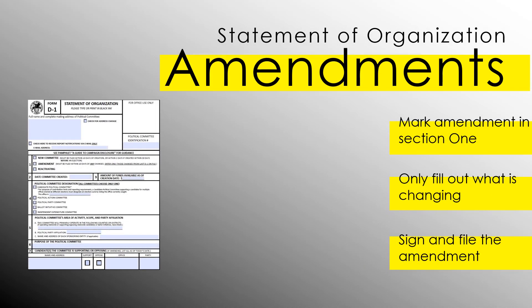Now that you have learned how to complete a D-1, let's quickly look at how to make an amendment to an existing committee. You'll need the same D-1 form as referenced in this tutorial. Make sure to have your committee's name and address in the top header and amendment marked in Section 1. From there, you will only need to fill out the information that's changing from the original D-1. For example, if your committee was making an amendment to change the committee treasurer, you would only need to fill out the treasurer information in Section 8. Once you have your committee's name and address, amendment marked in Section 1, and any other changing information filled out, simply sign and file the amended Statement of Organization.